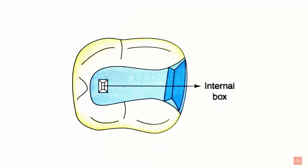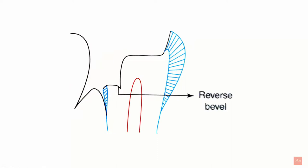The third is internal box preparation. Internal box preparation is done on the pulpal floor just adjacent to the uninvolved marginal ridge. In the picture you can see this marginal ridge is involved in the cavity preparation, and the internal box is prepared on the pulpal floor adjacent to the uninvolved marginal ridge.